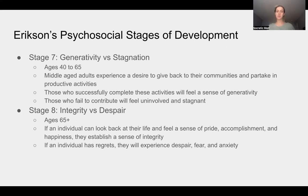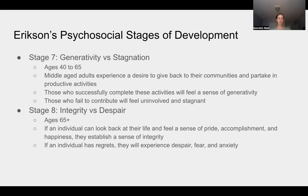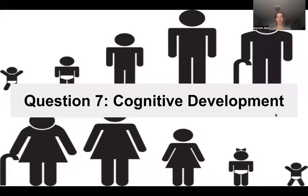Stage eight — integrity versus despair — is the final stage, from age 65 to death. If an individual can look back on their life with pride and accomplishment, essentially without regrets, they will establish a sense of integrity. If they look back filled with regret, they will experience despair, fear, and anxiety. Erikson's stages are a very high-yield topic for psych-soc — definitely memorize all eight stages with corresponding ages, and you can determine what is developed based on the stage names.